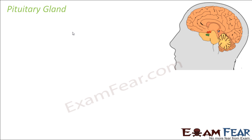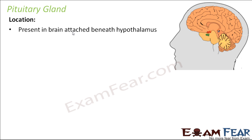The next gland we are going to talk about is the master gland, that is the pituitary gland. Till now we have spoken about three important endocrine glands: the thyroid gland, the pancreas (the endocrine part), and the adrenal gland. Now we are going to talk about a gland that is the boss of all these glands — it controls the secretion from all other glands. This gland is located in the brain, just below the hypothalamus, which is also an endocrine gland.